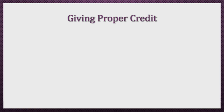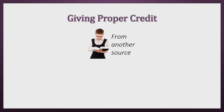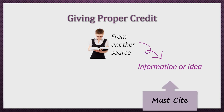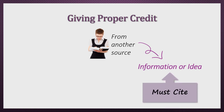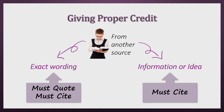One of the most common confusions I see among students is that they're not aware that they need to indicate whether they took just the ideas or also the exact wording from the original source. Let's say as you're reading a book, you come across an example of a study that you want to mention in your paper. This is getting a piece of information or idea from another source, so you must indicate in your paper where you got the information from by citing it, even if you use your own words. If instead you decide to copy and paste exactly what you're reading, you must not only cite where you got the material from, but also use proper quotation techniques to indicate that those words also came from the book.